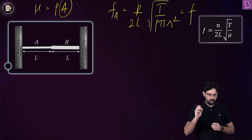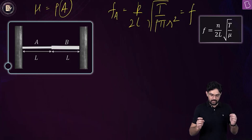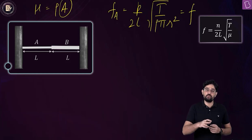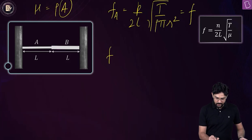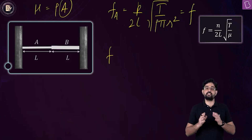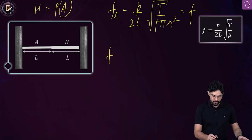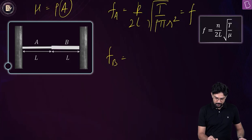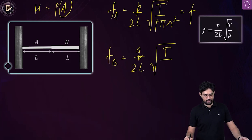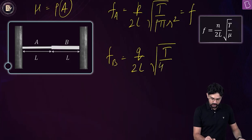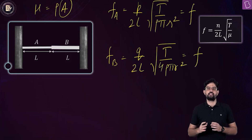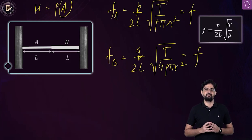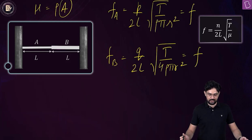Now let's focus on wire B. If the number of antinodes on this wire is Q, then it must be oscillating in its Q-th harmonic. So F_B = Q/(2L) × √(T/(ρπ(2R)²)) = Q/(2L) × √(T/(4ρπR²)), and this is also equal to F. So the frequency is not going to change.